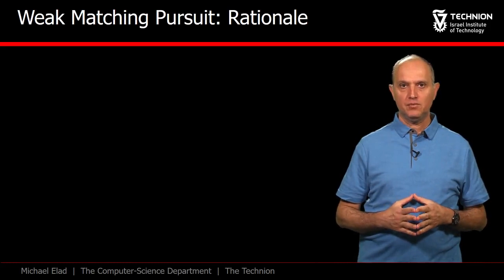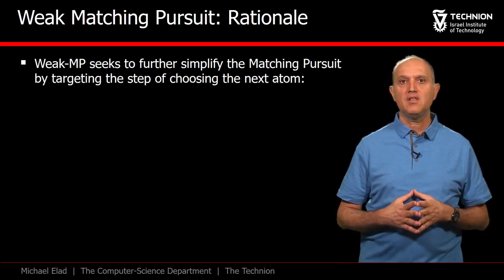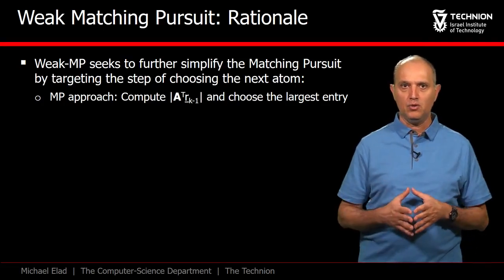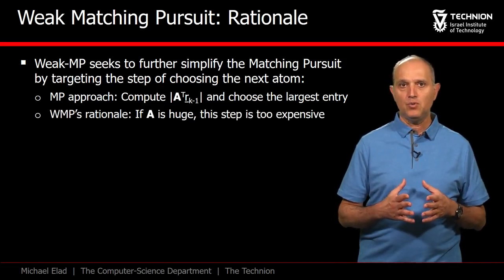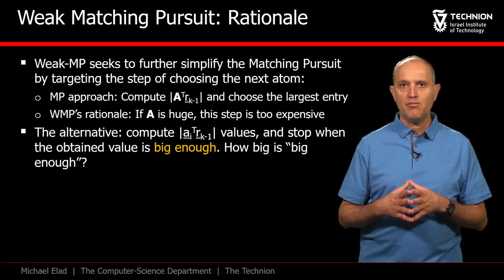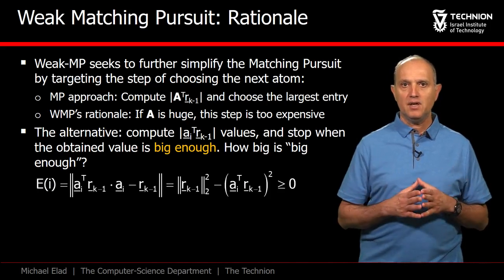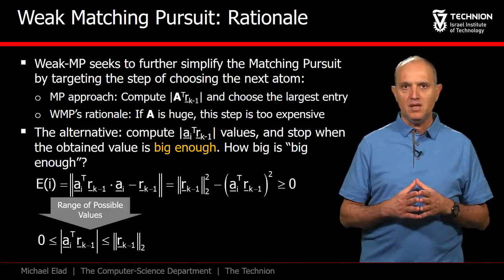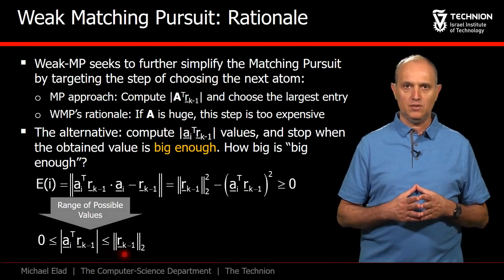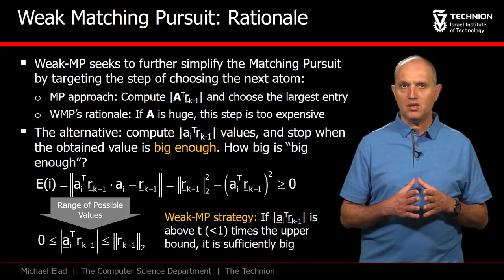Moving to the Weak Matching Pursuit, our goal is to further simplify the overall algorithm. Weak Matching Pursuit suggests modifying the step of choosing the atom. Recall that MP, just like OMP, computes A^T times r_{k-1} in order to choose the next atom. If A is big, this amounts to many calculations. Weak MP suggests applying this step sequentially, one column at a time from A, and stopping when a big enough inner product is obtained. It is easy to verify that since the atom A_i is normalized, the maximal possible inner product could be the norm of the residual. Thus, we set a threshold to be t times this upper bound, and stop the sweep stage when an inner product crosses this threshold.